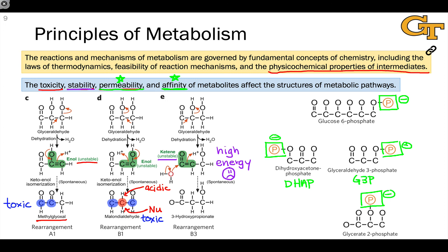The general picture is that the fundamental chemical properties — the reactivity and physical properties of metabolites — dictate the structure of metabolism. Metabolism has to occur in a controlled manner, meaning we must use intermediates of relatively low toxicity and relative stability. We can't have very high energy, extreme charges, or unstable functional groups like enols and ketenes. Ideally, metabolites have essentially zero permeability through the cell wall and a strong affinity for enzyme active sites so that they are efficiently bound and reacted through metabolic pathways.